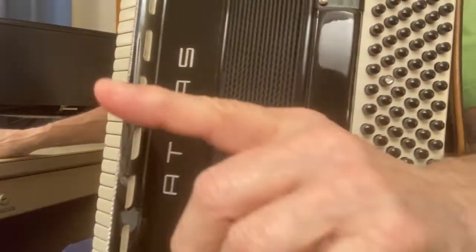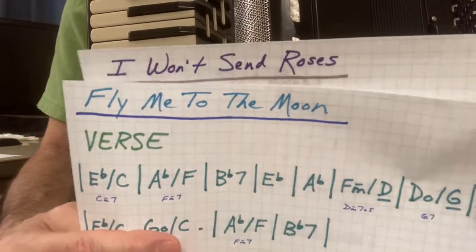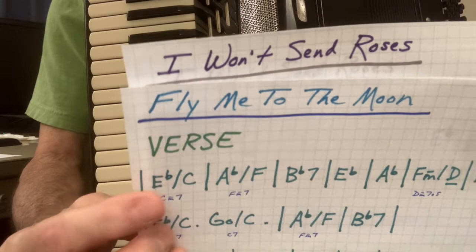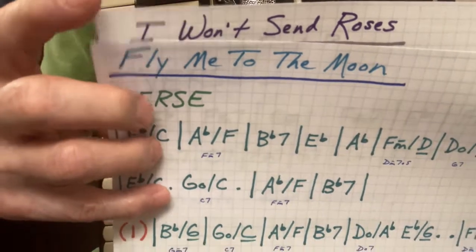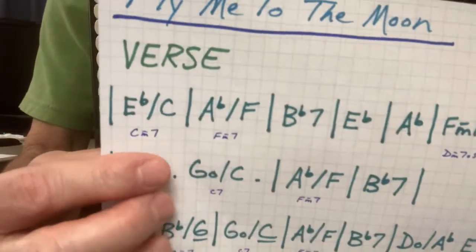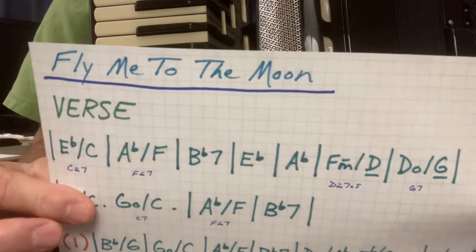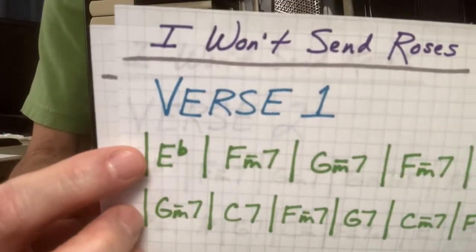Now, I present this song because I Won't Send Roses, when combined with, played one after another with Fly Me to the Moon, makes a really nice medley. I have written these out, both of these, in the key of E flat major. Fly Me to the Moon starts out with a C minor seven, but it's in the key of E flat. I already presented that song. And this song is in the key of E flat and starts on E flat.